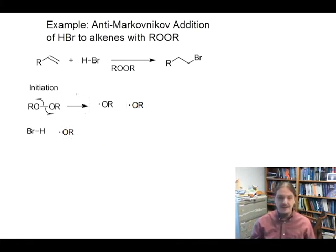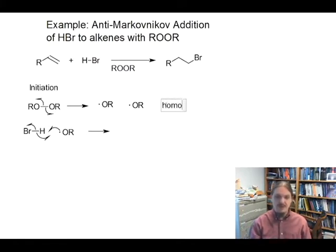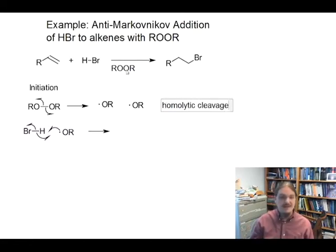So we need another initiation step to get something that we're going to use later. The second initiation step is an alkoxy radical interacting with hydrogen bromide. If we want to keep track of the steps, we have homolytic cleavage as our first step. And then our second step is going to be abstraction, specifically abstraction of a hydrogen.